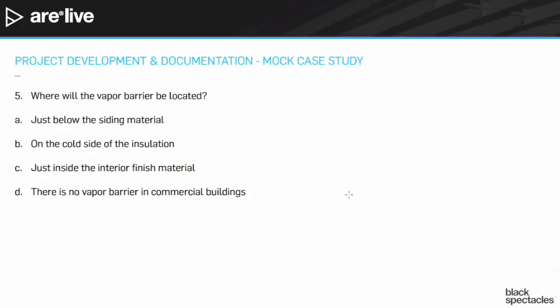A: just below the siding material. B: on the cold side of the insulation. C: just inside the interior finished material. And D: there is no vapor barrier in commercial buildings.